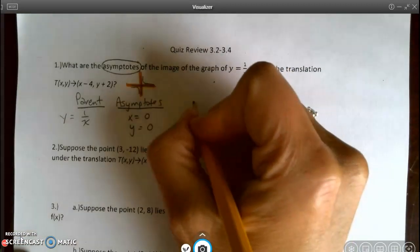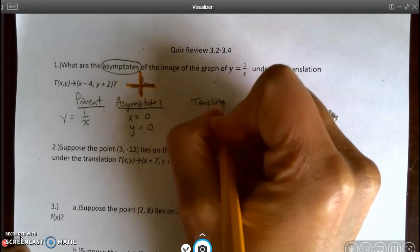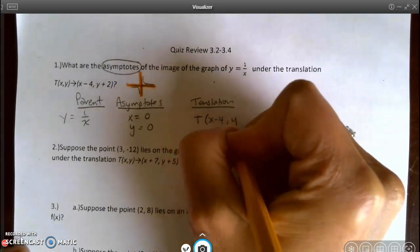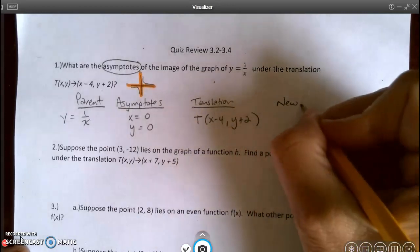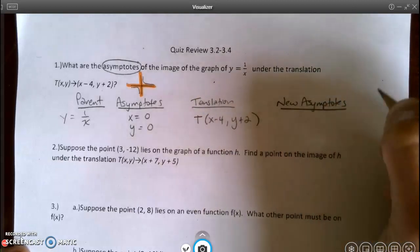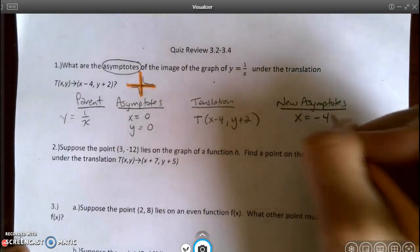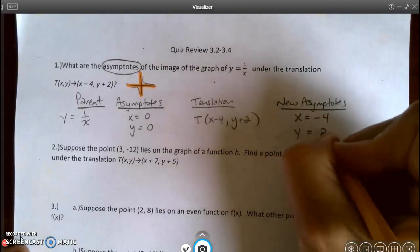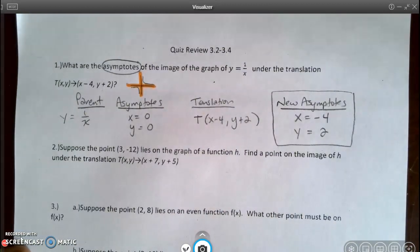Then I look at my translation rule, and I see that it's going to be x minus 4, y plus 2. So my new asymptotes, I'm going to take x and subtract 4, so I get x equals negative 4, and y I'm going to add 2, so 0 plus 2 is 2. Here are the equations for my new asymptotes.